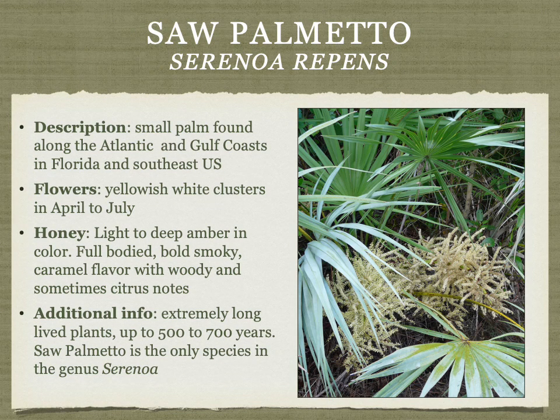Saw palmetto, sometimes called palmetto, is a palm found in the southeastern US and Florida. The honey is deep amber, full-bodied, bold, smoky, and caramel, sometimes with woody and citrus notes. Even though these are not very large plants, they are extremely long-lived — up to 500 or 700 years.